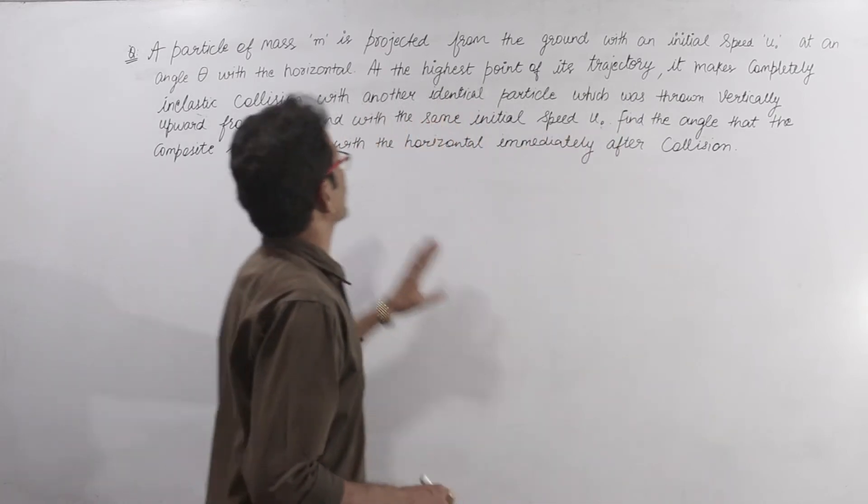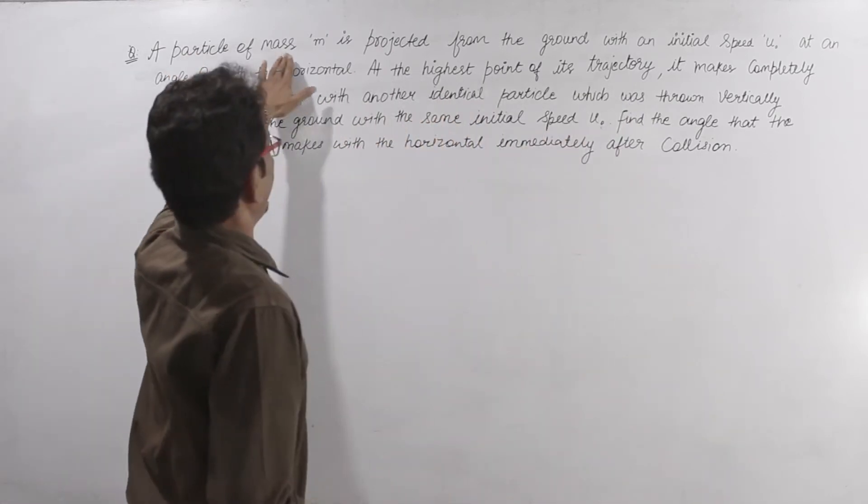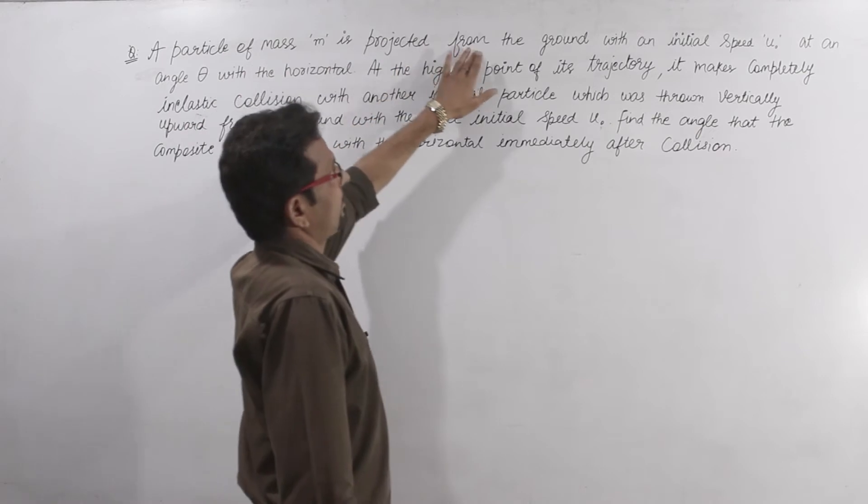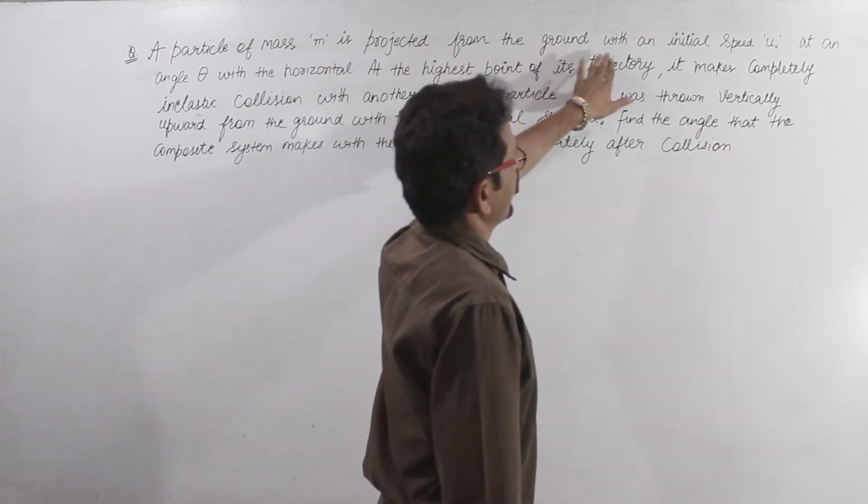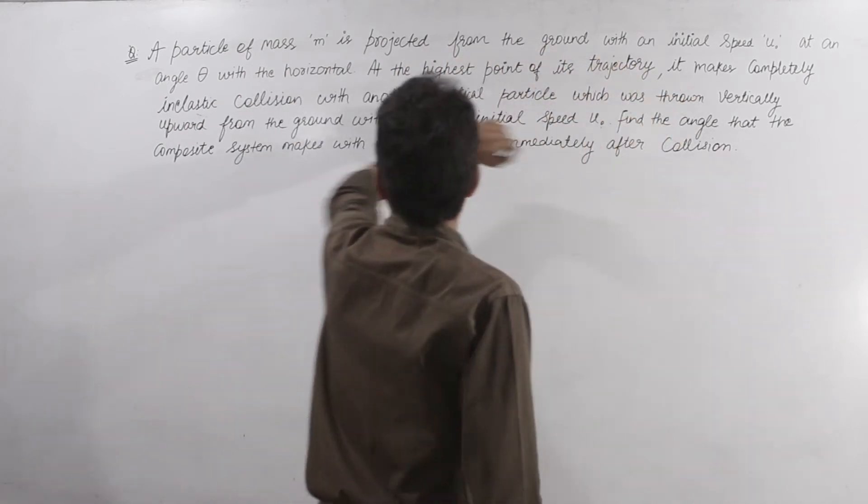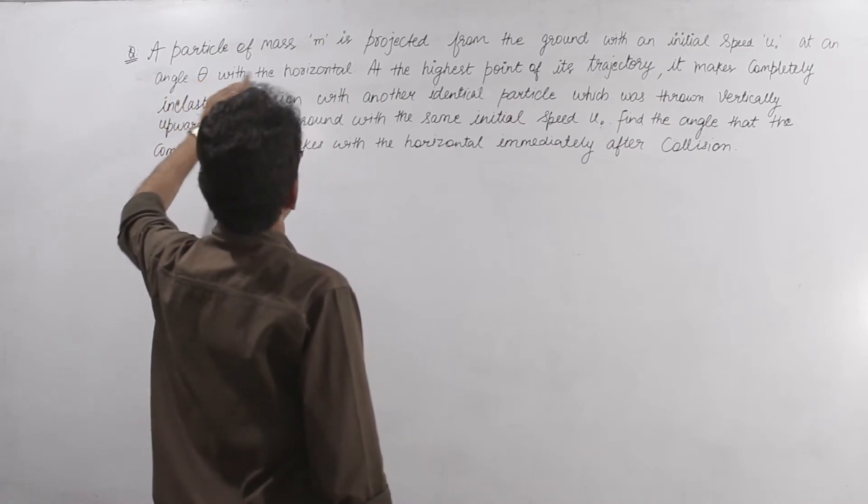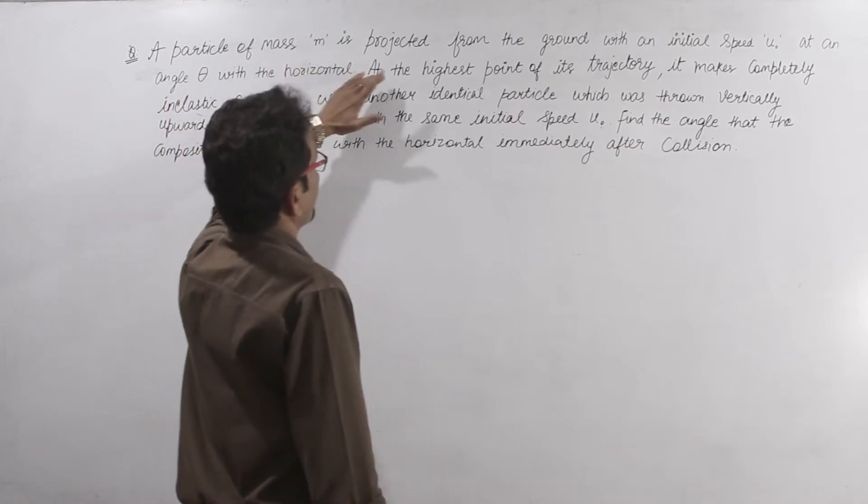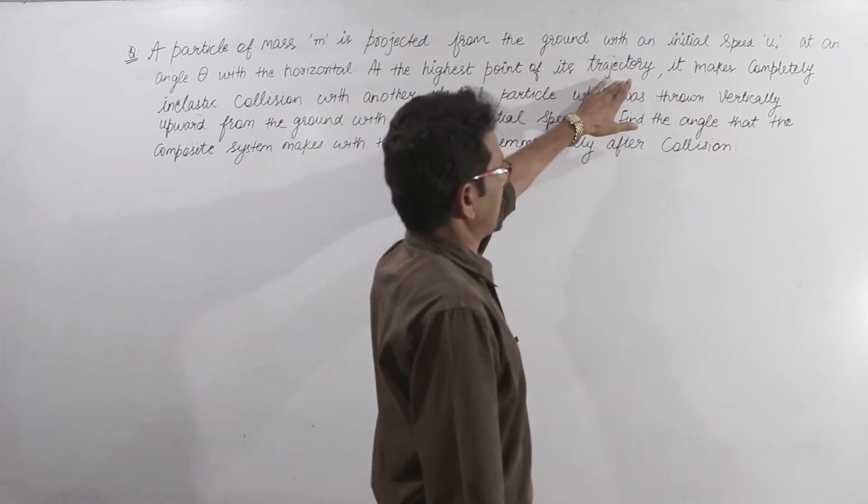Your question is: a particle of mass m is projected from the ground with an initial speed u0 at an angle theta with the horizontal. At the highest point of its trajectory,